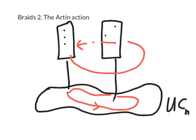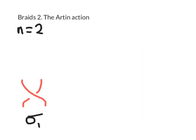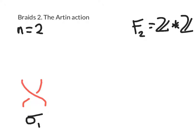Rather than justifying this in detail, let's look at an example. We're going to work with the two-strand braid group, which has one generator sigma_1, in which the two strands cross over once. We're going to see how this acts on the free group on two generators, F2, which is just Z star Z. So we take our two points Z1 and Z2. The braid picks them up and rotates them so that one comes around the other and they swap over.